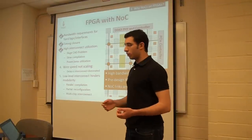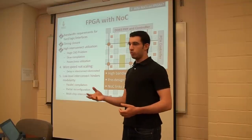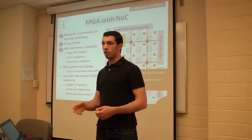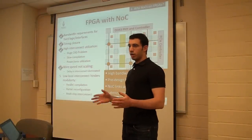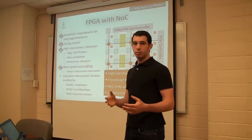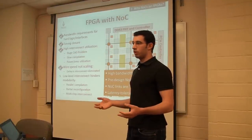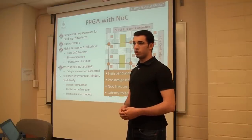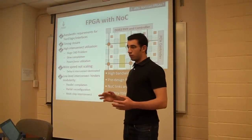Network links are reusable — the same link serves traffic going to different places, improving link utilization, reducing interconnect use, and simplifying CAD. Regarding wire speed, a network is used with latency-tolerant communication: you accept multiple hops, so whether you have a lot of delay or a little delay, you tolerate it using request-and-acknowledge signals.